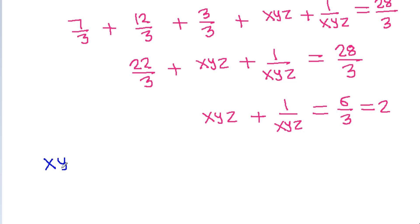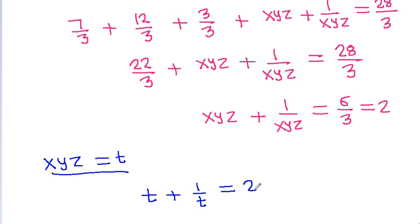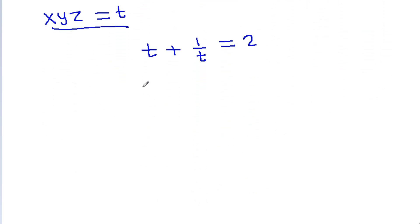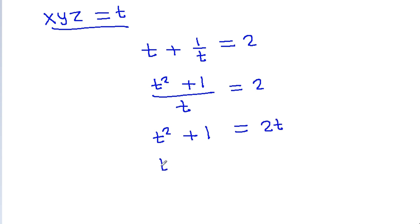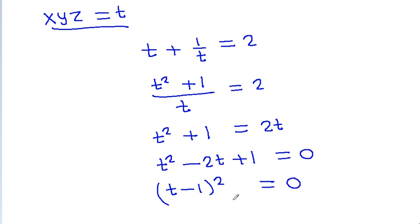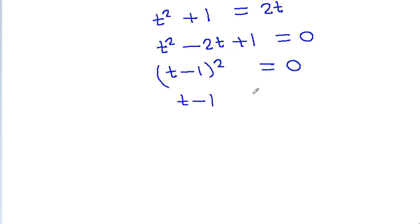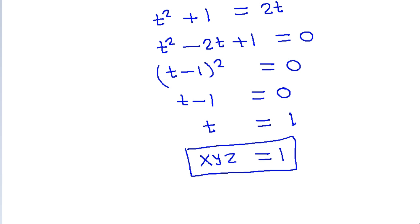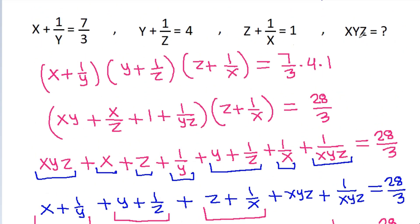Now suppose xyz is equal to t. Then t plus 1/t is equal to 2, and t squared minus 2t plus 1 equals 0, which means (t minus 1) squared equals 0. That means t will be equal to 1, and since t is xyz, therefore xyz equals 1.